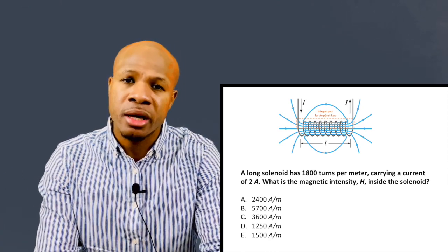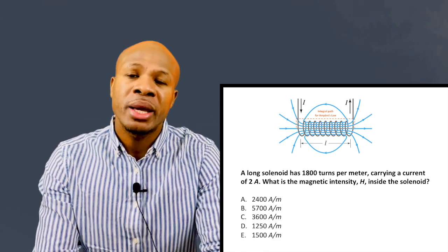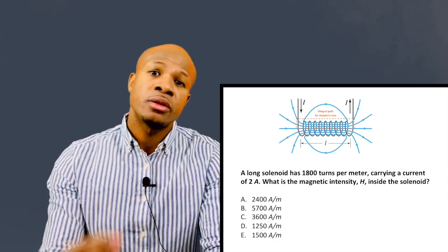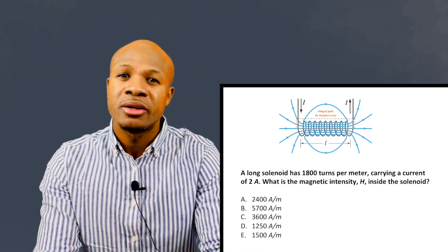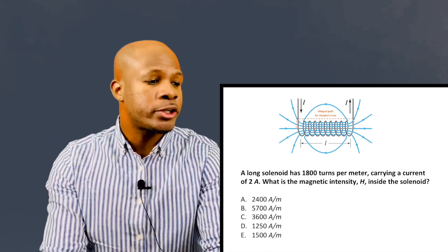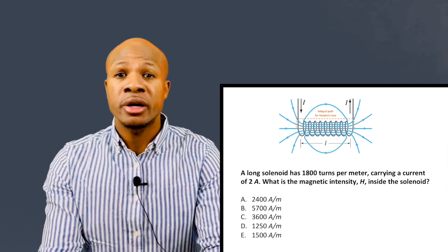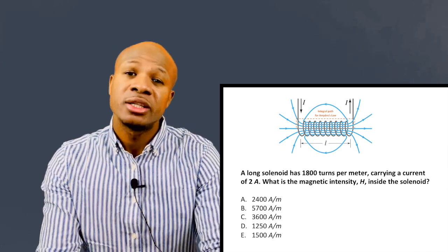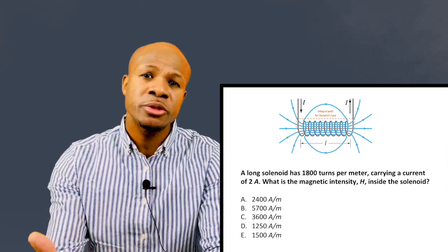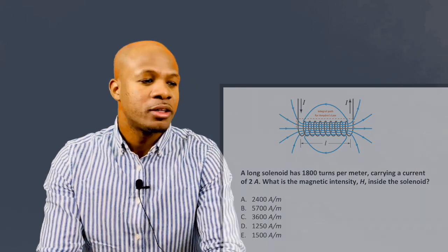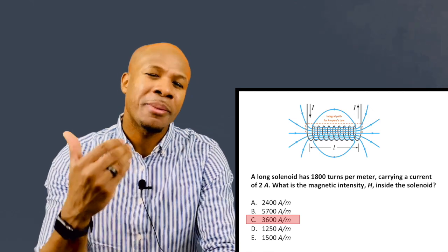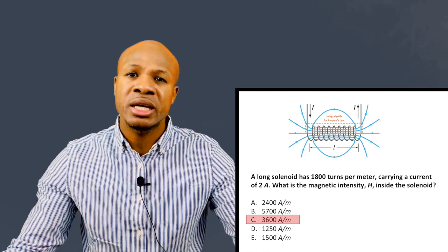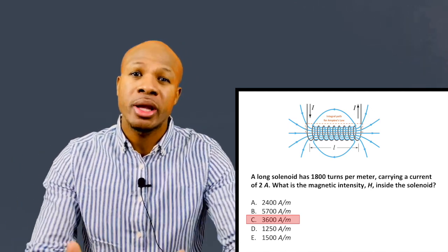Well, magnetic intensity is very easy to calculate for a solenoid. Magnetic intensity will be equal to the number of turns times the current. That's it. So you have 1800 turns per meter and the current is two amps. So you just multiply 1800 times two and you get 3600. So the answer will be 3600 amps per meter. And that is the magnetic intensity that is inside of this solenoid or MRI machine.